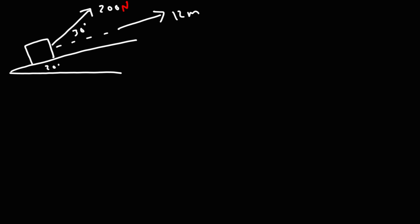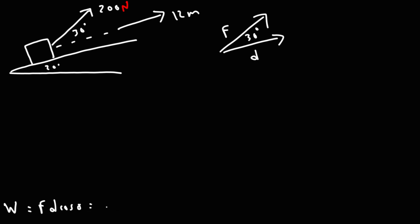Calculate the work done both ways — the easy way and using the dot product formula. The angle between the force vector and the displacement vector is 30 degrees. Using W = Fd cosθ: the magnitude of the force is 200 newtons, the displacement is 12 meters, and cosine 30 gives approximately 2,078 joules.